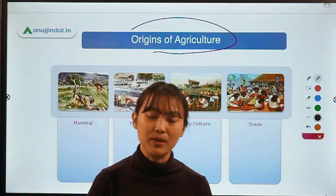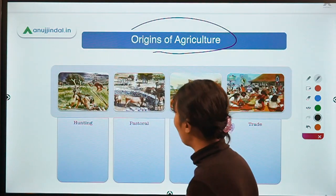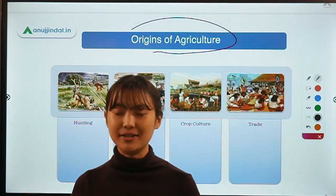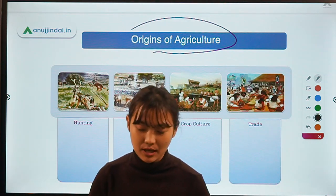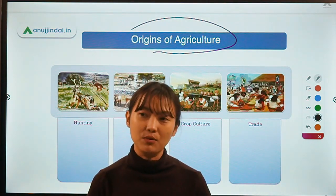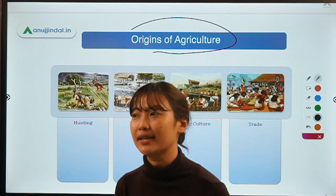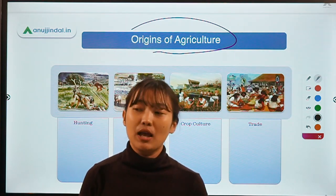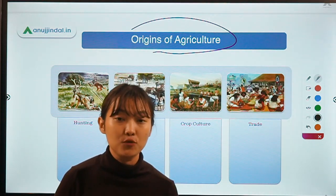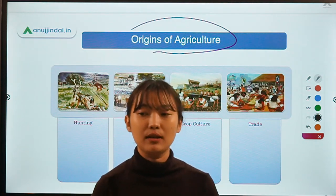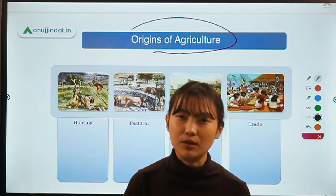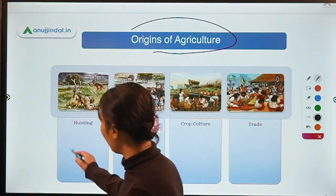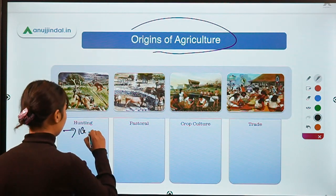Let me take you back ten thousand years, where our ancestors were just gathering and hunting for survival. At that point of time they would go from place to place, hunting wild animals, or foraging for berries, food grains, or anything they could possibly find or eat. This was during the ice age.